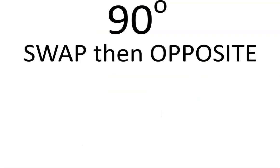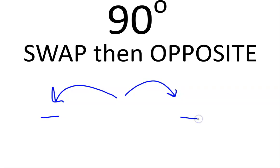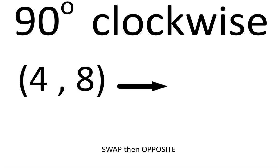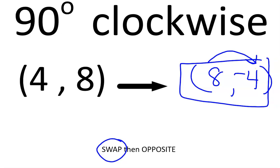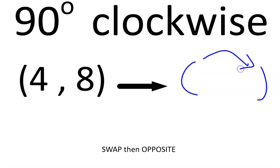Let's take a look at an example. For 90-degree rotations, you swap the order of the numbers, and then depending on which way you're going, you change the sign of that value. If you're going 90 degrees clockwise, that's the coordinate whose sign you'll change. Swap the two numbers and then change the sign. The rule is: swap, then opposite. Drawing the directional arrow helps you remember which value should be changing signs.